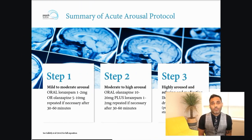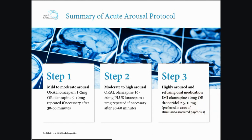Now let's look at the acute aspect. If we do have acute arousal symptoms or acute psychosis, there are three key steps. Firstly, for mild to moderate arousal, consider oral lorazepam 1 to 2 mg or olanzapine 5 to 10 mg, repeated after 30 to 60 minutes. Step 2, for moderate to high arousal: oral olanzapine 10 to 20 mg plus lorazepam 1 to 2 mg, repeated if necessary after 30 to 60 minutes. Step 3, if the patient is highly aroused with elements of aggression or acute psychosis, then intramuscular lorazepam 10 mg or droperidol 2.5 to 10 mg is required.